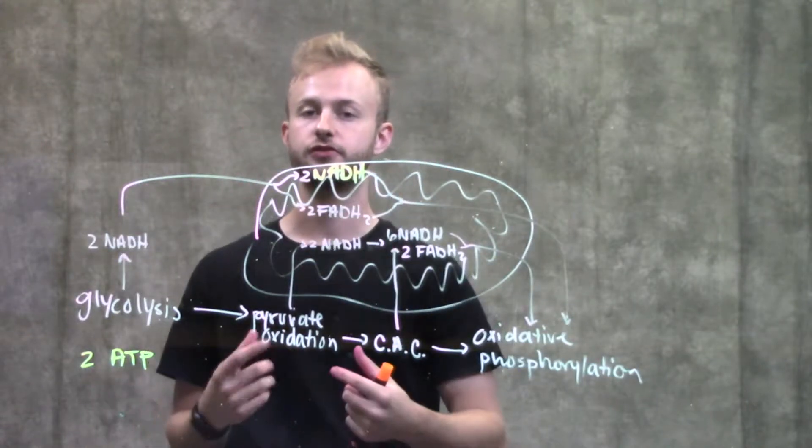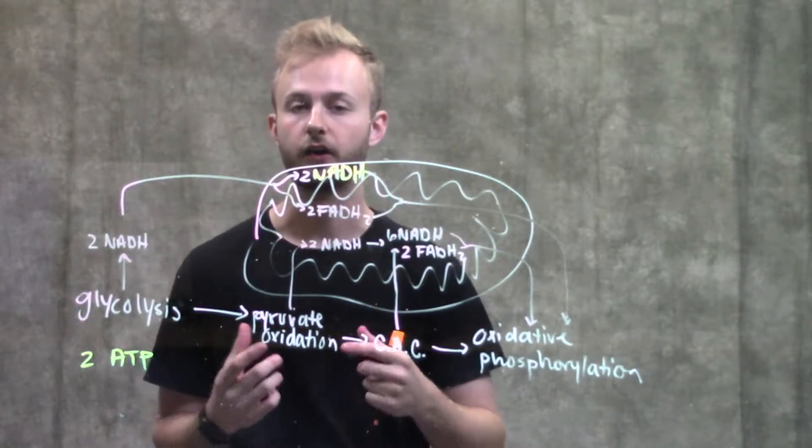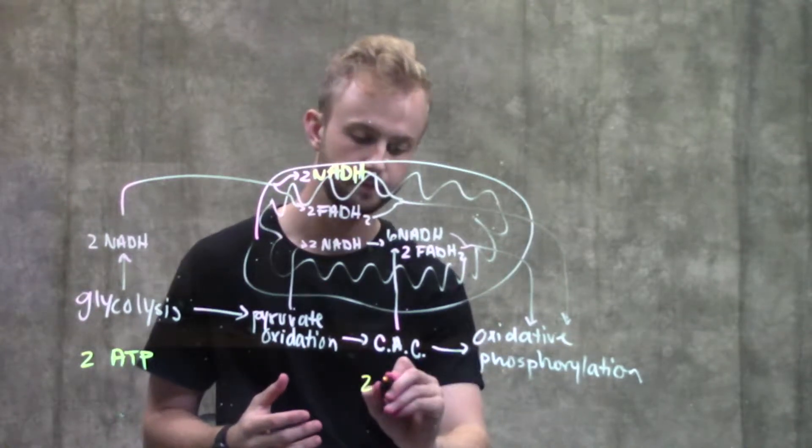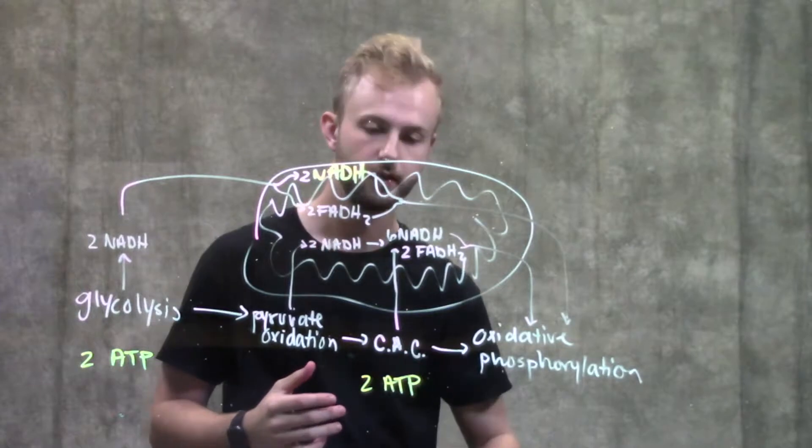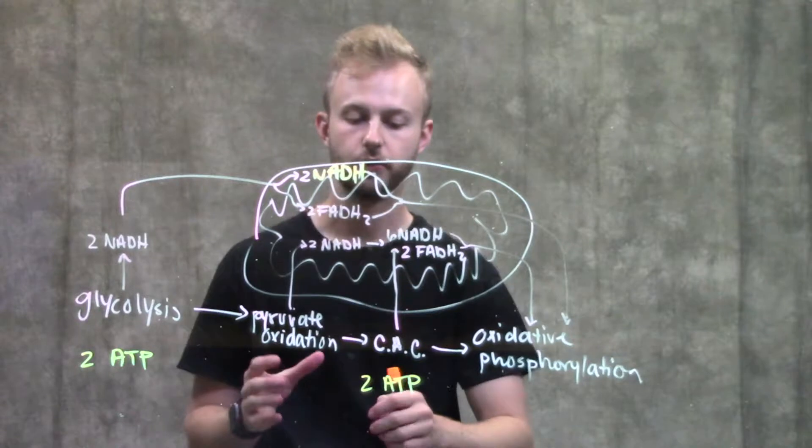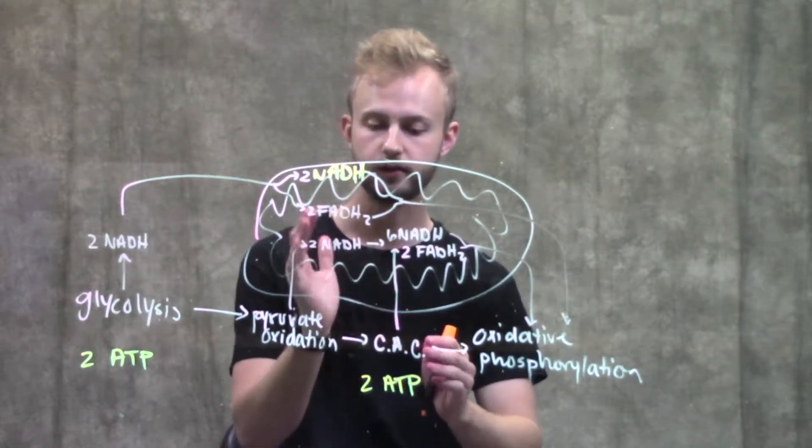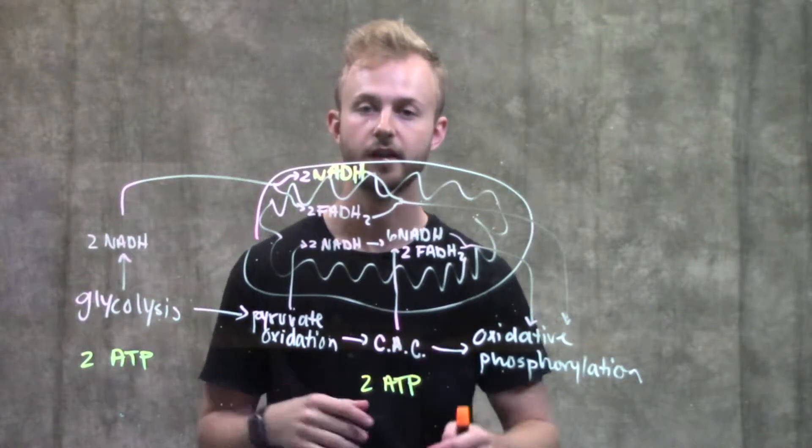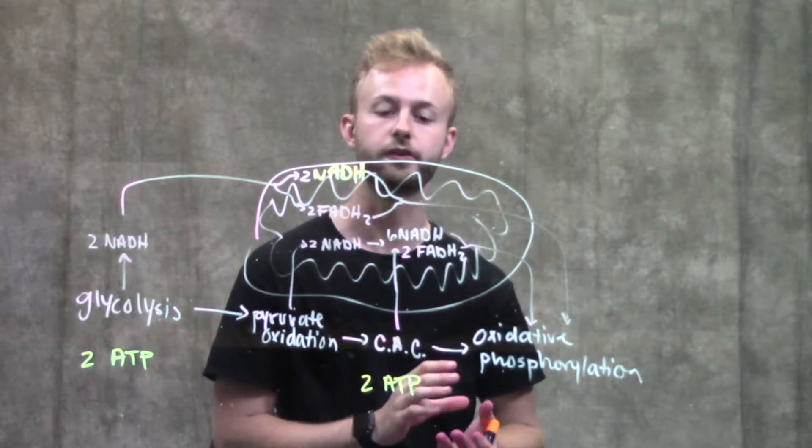The citric acid cycle makes two ATP equivalents, but it doesn't make ATP specifically. This is all talking about per glucose molecule. For the citric acid cycle, this would be going around twice to produce these two ATPs to fully oxidize one molecule of glucose.